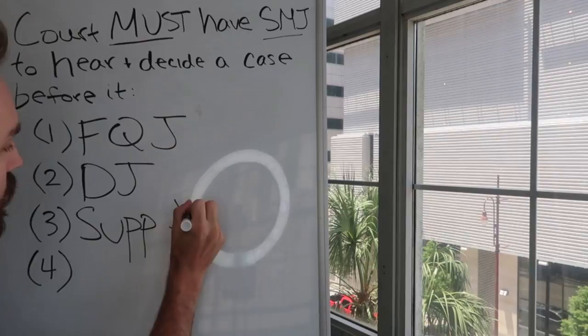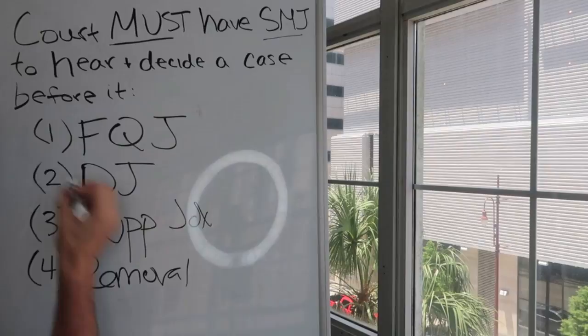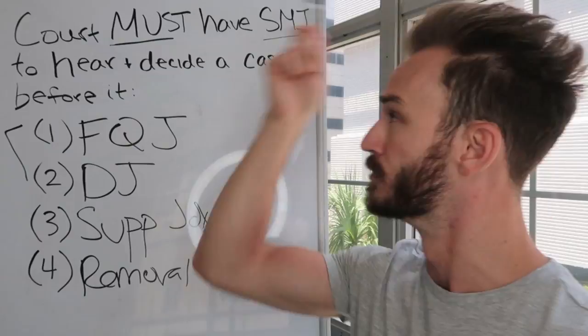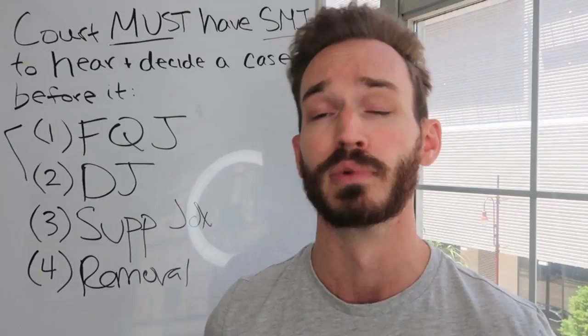Federal question and diversity are going to be your bigger, more common ones. But supplemental jurisdiction and removal are also more nuanced ways that a federal court can obtain subject matter jurisdiction, which is a requirement the court needs to hear and decide the case.